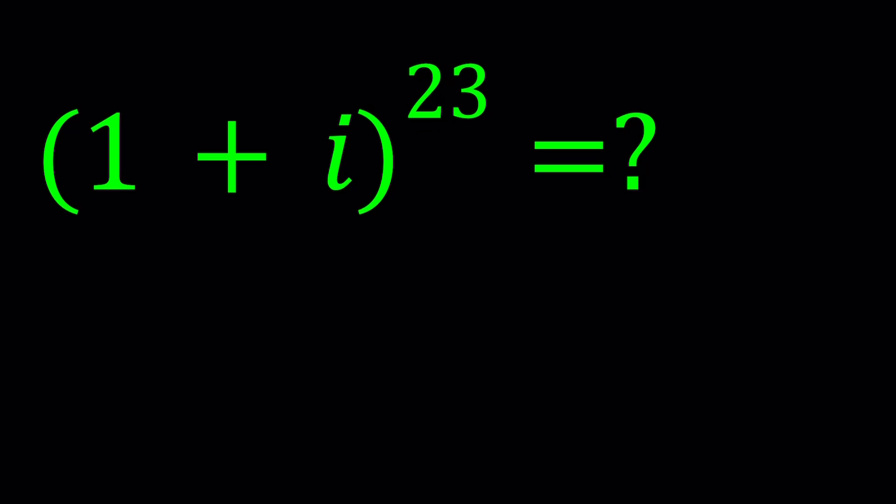So by definition, i squared equals negative 1. And then you can define complex numbers using this, such as a plus bi, where a and b are real numbers, and i is the number whose square equals negative 1.